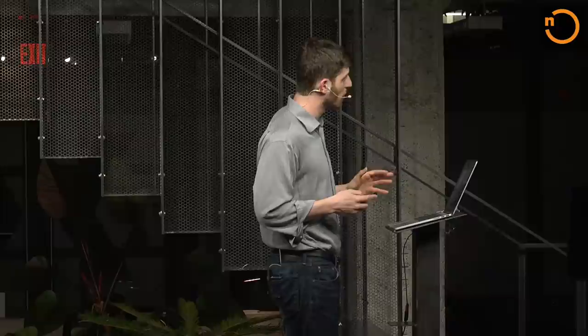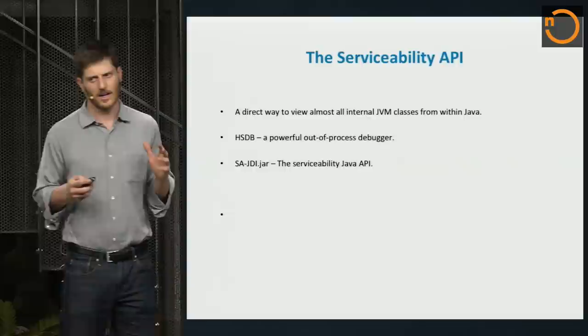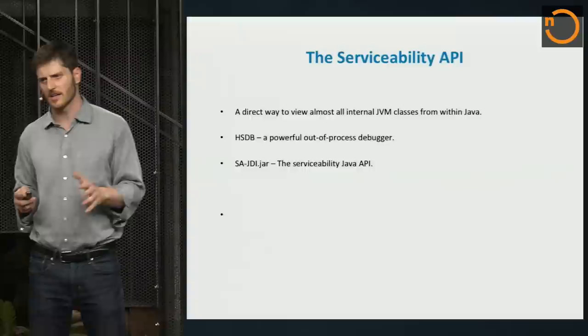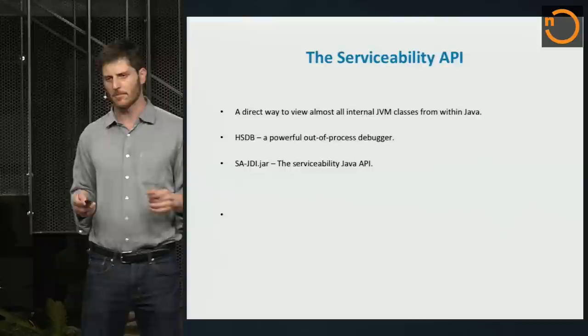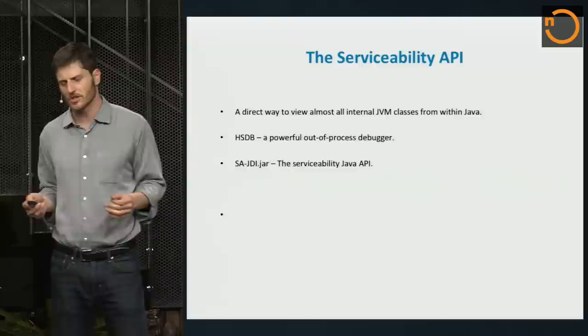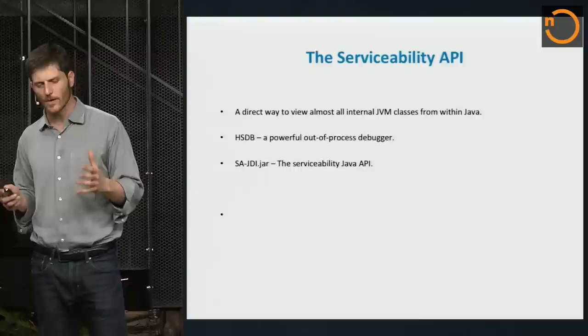One more interesting component I wanted to cover is something called the Serviceability API, specifically HSDB. This is another extremely powerful tool not a lot of people know about within the JVM ecosystem. After BTrace, this is probably my third go-to tool after JStack. HSDB is an out-of-process debugger that lets you connect to the JVM and introspect the entire memory space of the JVM and do amazing things.